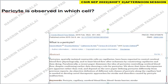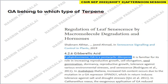Next: gibberellic acid belongs to which type of terpene? Gibberellin is a phytohormone and belongs to the diterpene class of compounds — specifically it is a pentacyclic diterpene compound. Gibberellins generally play important roles in cell elongation, seed germination, dormancy, and reproductive growth.